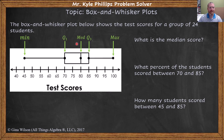What's great about this is it will always cut your data into 25% sections. So what is the median score? Our median score is going to be 80.